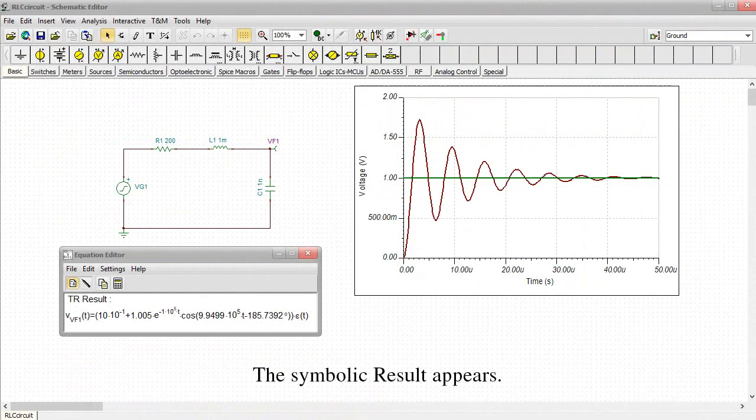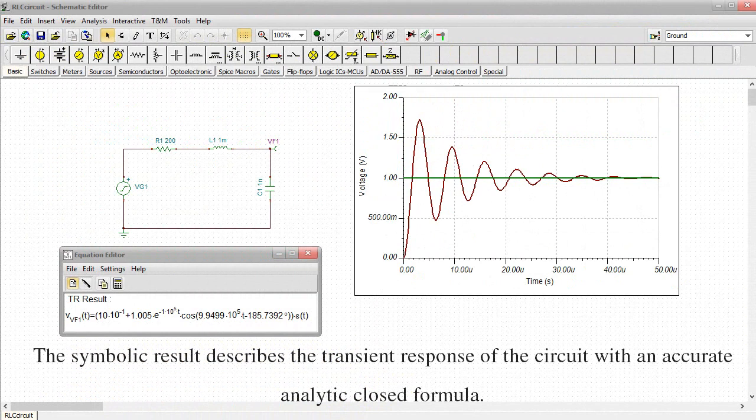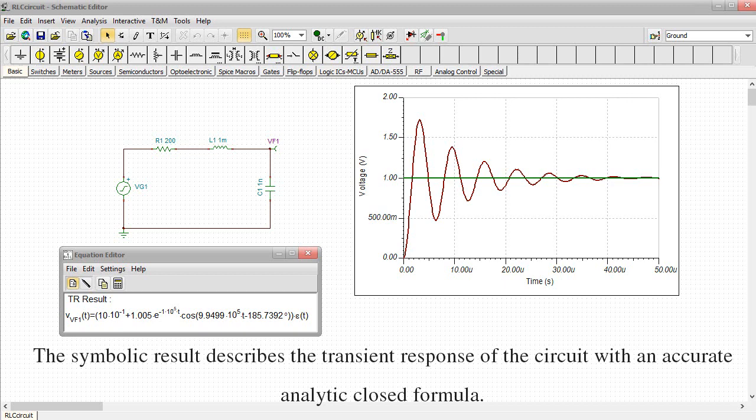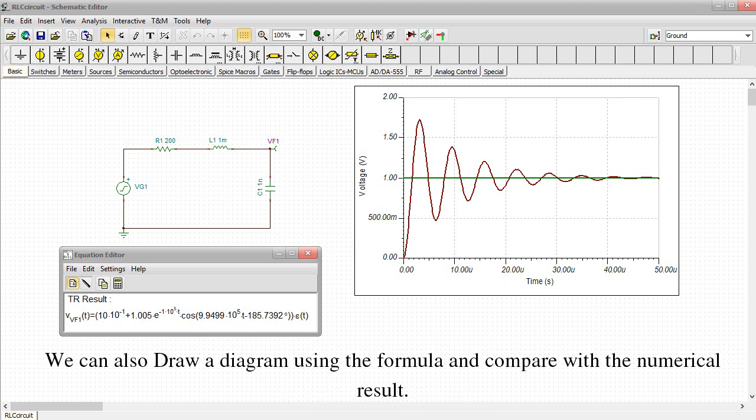The symbolic result appears. The symbolic result describes the transient response of the circuit with an accurate analytic closed formula. We can also draw a diagram using the formula and compare it with the numerical result.